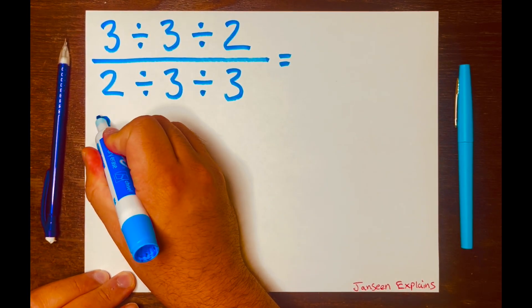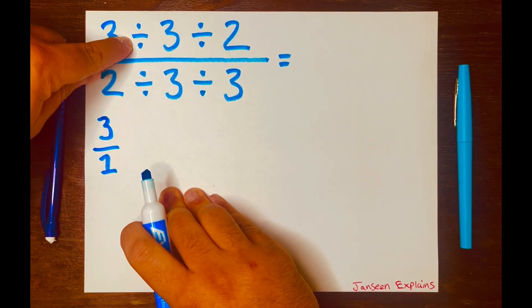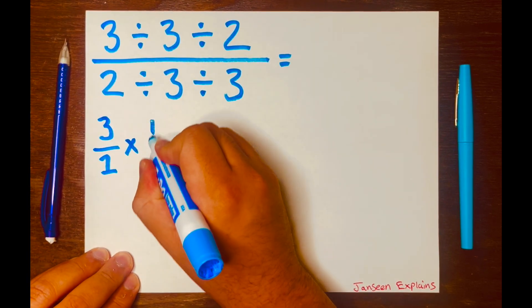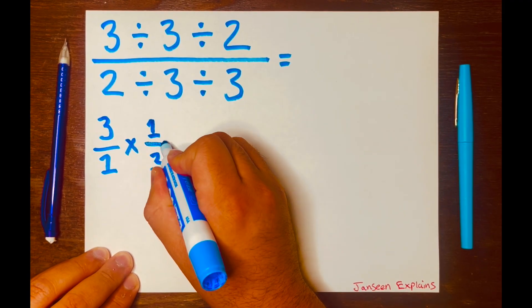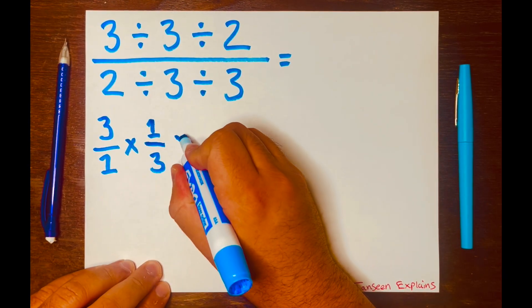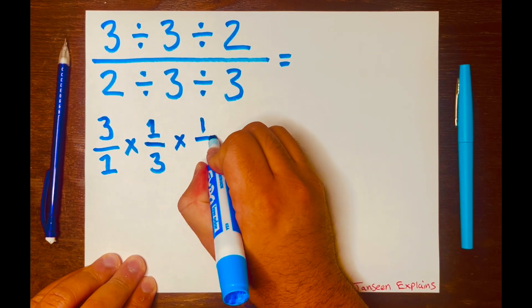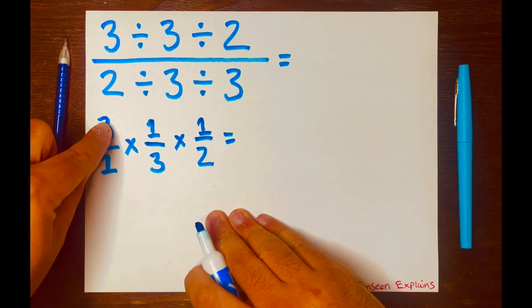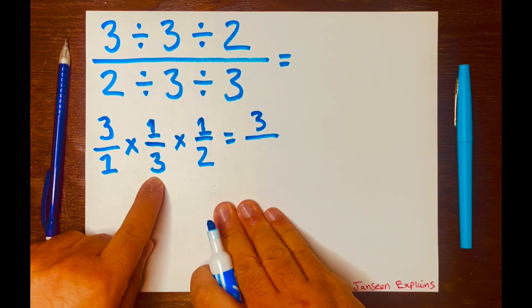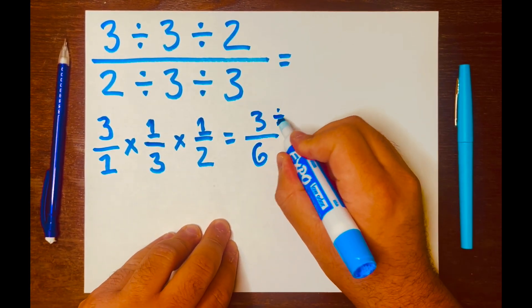So three over one — we know three divided by one equals three, does not change the three. Then we change this division symbol to multiplication, and then we're going to flip that three over one, written as one over three. We'll also change the next division symbol to multiplication, and this two over one will be written as one over two. Then multiply across: three times one is three, times one is three, over one times three is three, times two is six. So we have three over six, which simplifies to one over two.